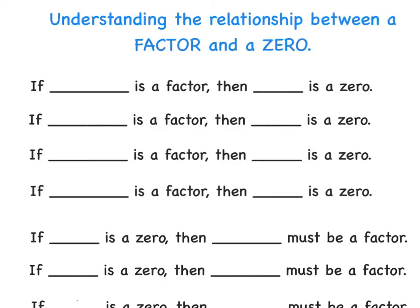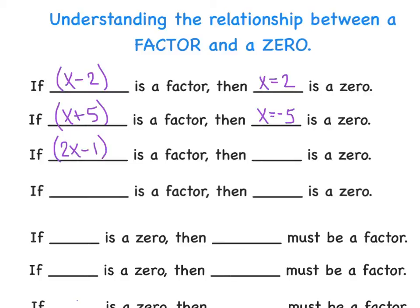This slide lays the foundation for understanding the relationship between a factor and a zero. A factor is typically a binomial. If (x minus 2) is a factor, then x equals positive 2 is a zero. If (x plus 5) is a factor, then x equals negative 5 is a zero — the number becomes its opposite. If (2x minus 1) is a factor, then x equals 1/2 is a zero. If (5x plus 7) is a factor, then x equals negative 7/5 is a zero.